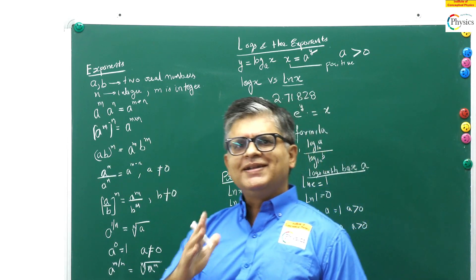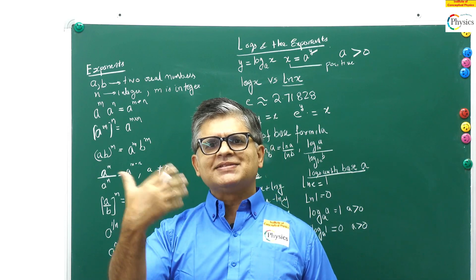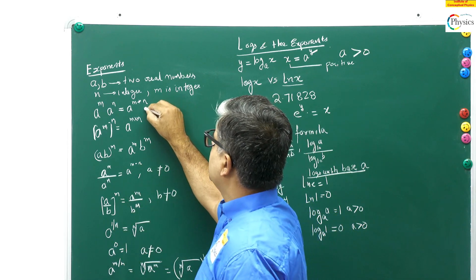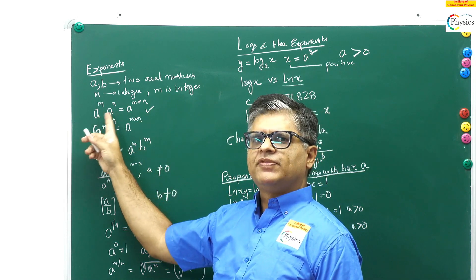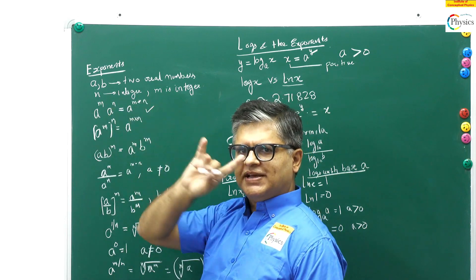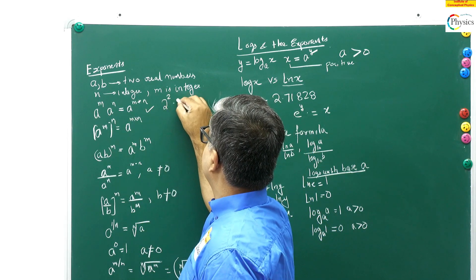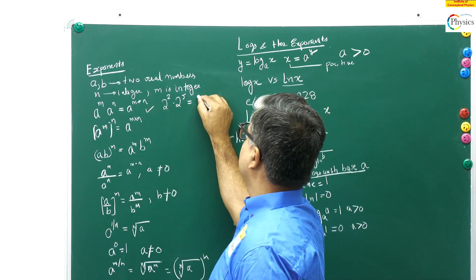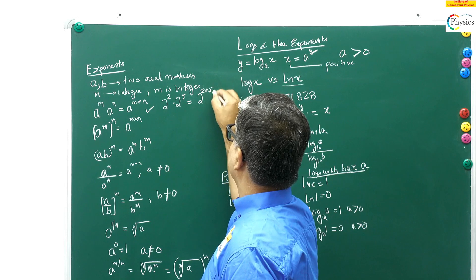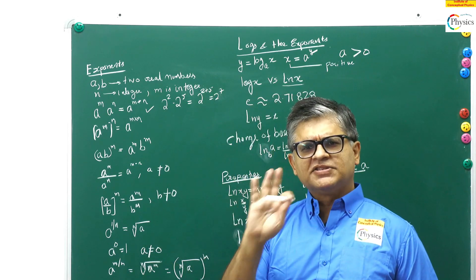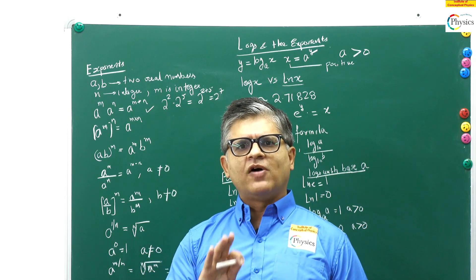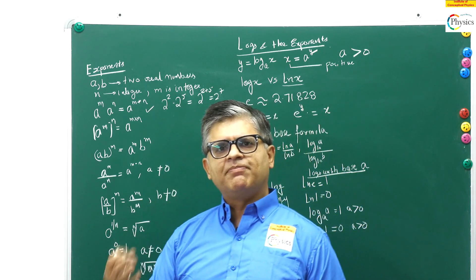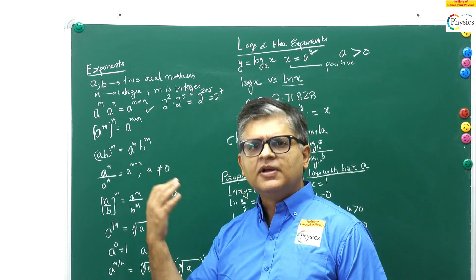Let's start with the first property. If the base is common, the powers get added. For example, 2 raised to power 2 multiplied by 2 raised to power 5 — the base is same — equals 2 raised to power 7. This is taught in junior classes; it's a quick revision of maths you may have forgotten, and it will be used throughout your physics, chemistry, and maths for the next two years.